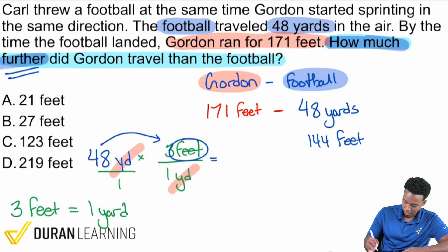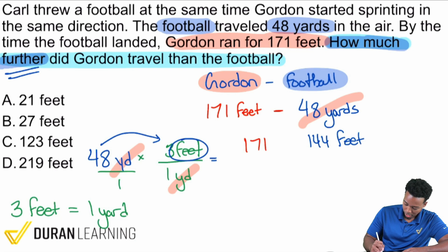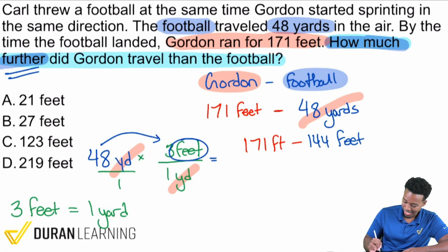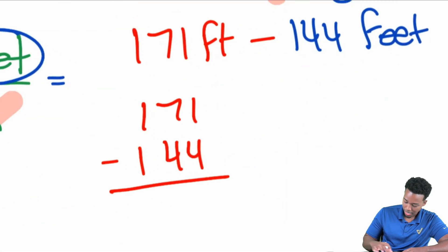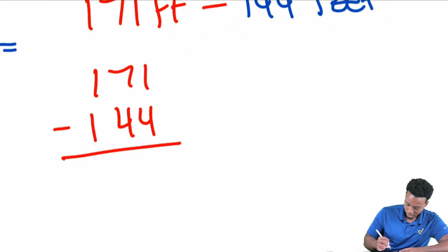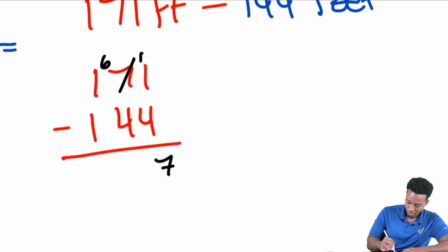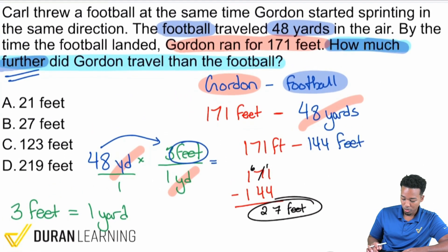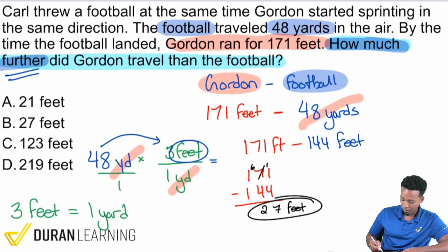All I have to do is place that right here to convert — that's 144 feet. We still have 171 feet minus 144 feet. When we subtract: 171 minus 144. Borrowing gives us 11 minus 4 is 7, 6 minus 4 is 2, 1 minus 1 is nothing. So 27 feet — that's how much further Gordon ran than the football traveled.